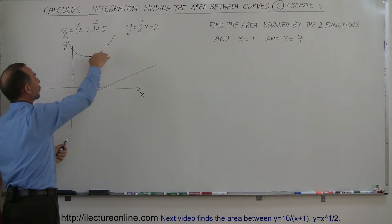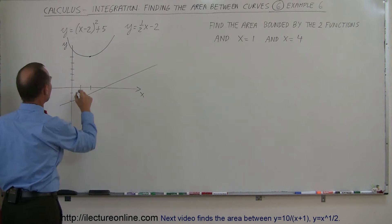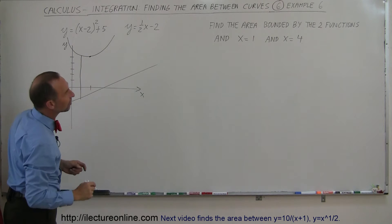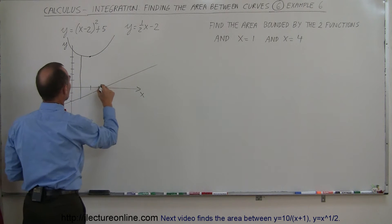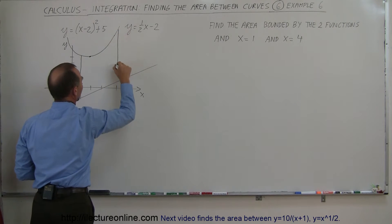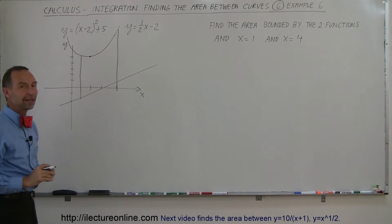So we need to find the area between these two functions, but where is it bounded? Well, we have two more lines. x equals 1, that would be this line right here. And x equals 4, that would be this line right there. And so this is the area that we're interested in.